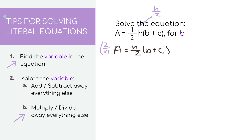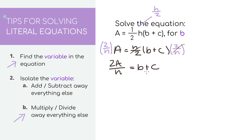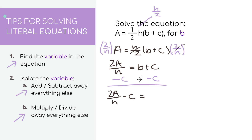Let's multiply the reciprocal on both sides. On the left, we have 2a over h. On the right, the fractions cancel out, so we're left with b plus c. Now b is almost isolated except for this positive c, so we do the opposite and subtract c. Now we're left with 2a over h minus c equals b. Let's just rewrite it so that b equals 2a over h minus c. And that's our final answer.